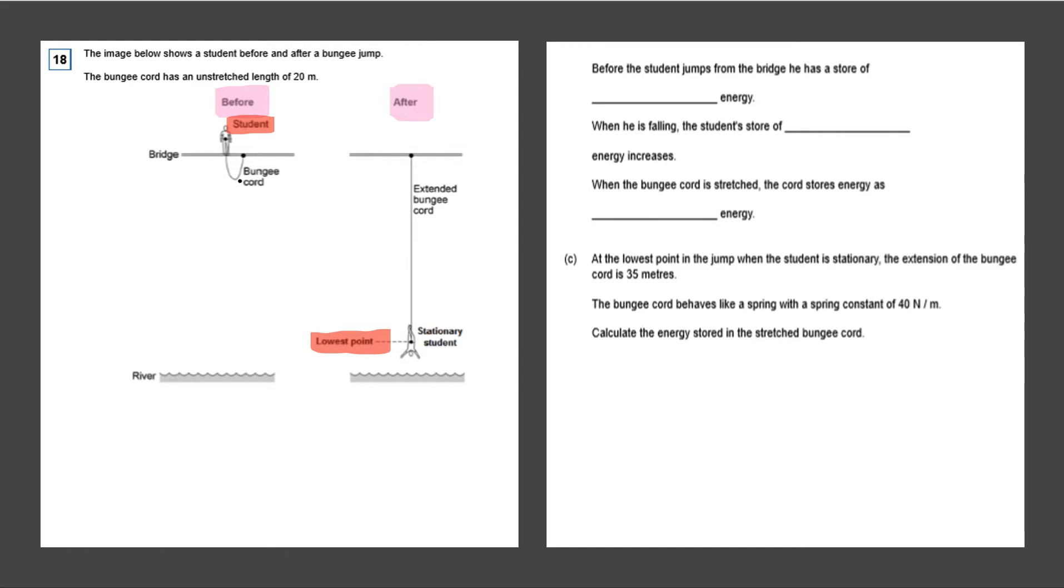And over here we have the student and over here we have the lowest point of the student. At the beginning the student is on the bridge and he is about to jump all the way down by the bungee cord. And this is the bungee cord over here. The bungee cord, this is the extension of it. And the person is over here.